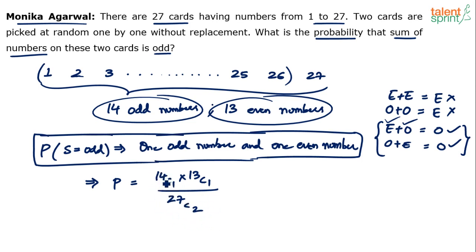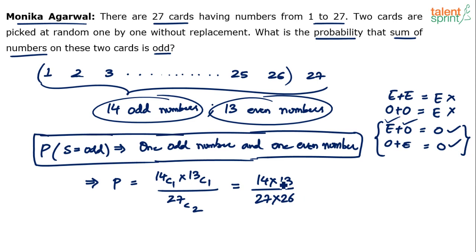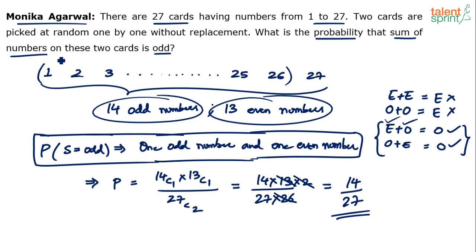The number of favorable ways is 14C1 into 13C1. Since nC1 equals n, this is simply 14 into 13. The total 27C2 equals 27 into 26 divided by 2. Simplifying: 14 into 13 over (27 into 26 / 2) — the 13 and 26 cancel with the 2, leaving 14 over 27. So the final answer is 14/27.